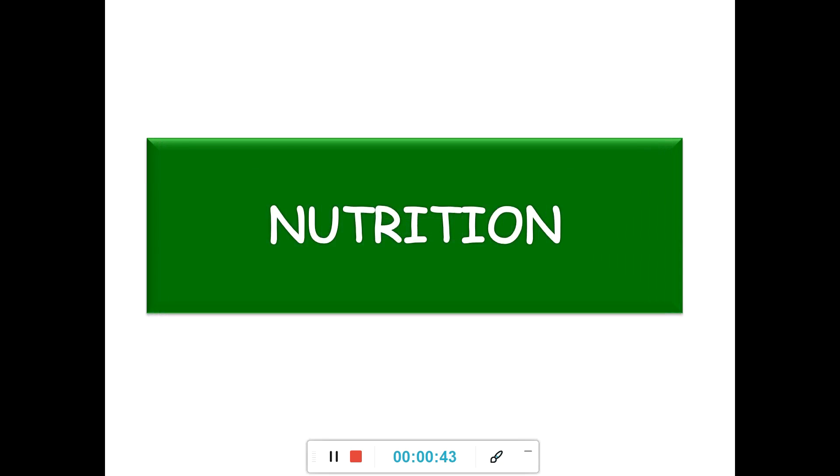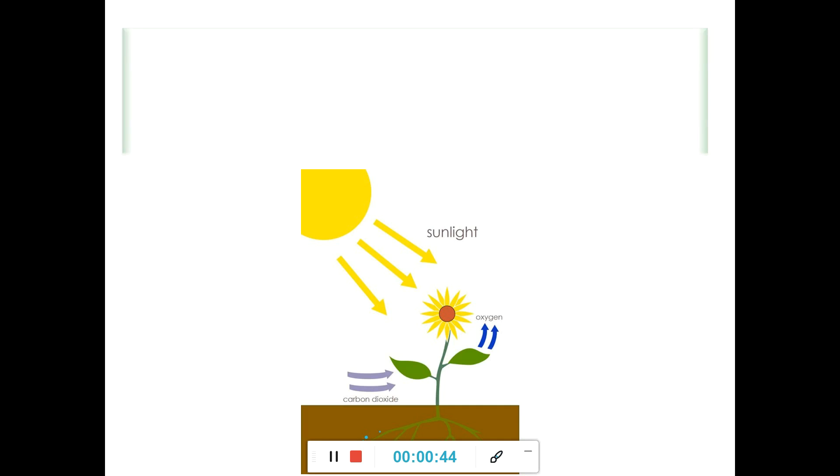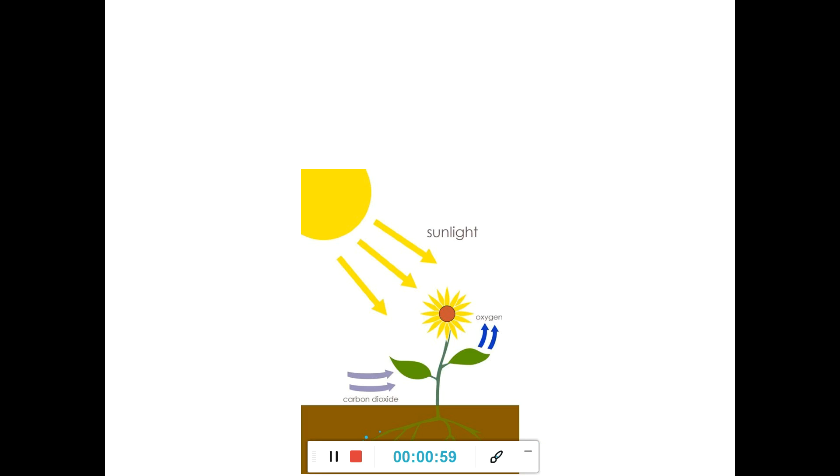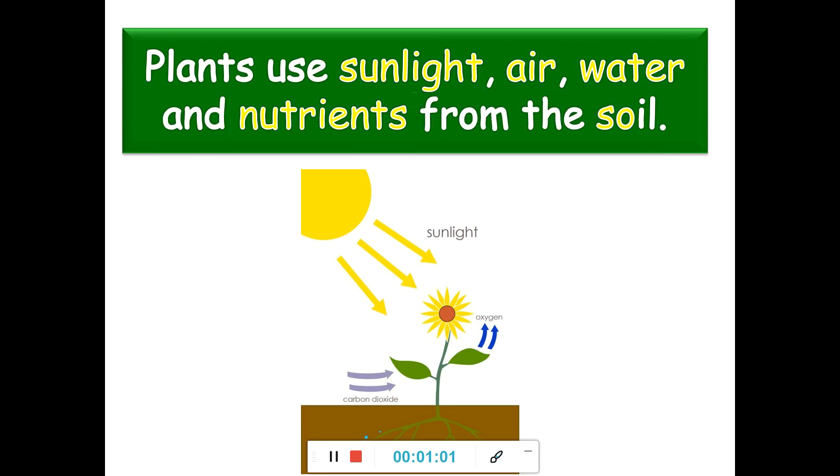Nutrition. Plants make their own food. Air, sunlight, water, soil. Plants use sunlight, air, water and nutrients from the soil.